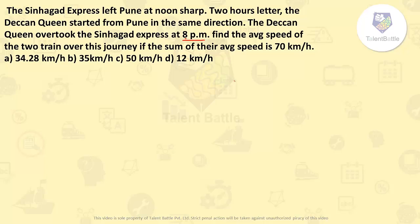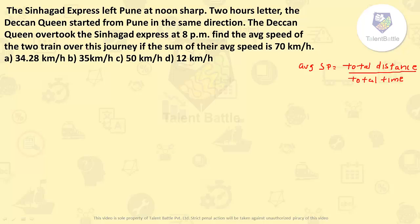This question is based on the time-speed-distance concept where we need to use the concept of average speed. The formula for average speed is total distance travelled divided by total time taken. Now, what they have given — find the average speed of the two trains over this journey. Average speed of two trains means we need to calculate the distance travelled by both trains.